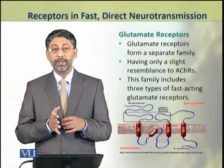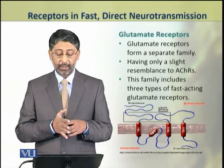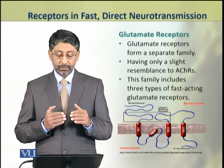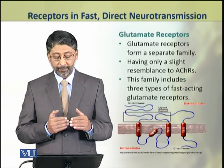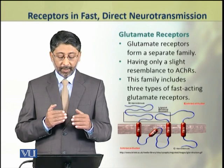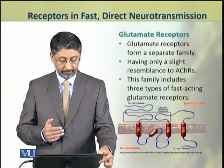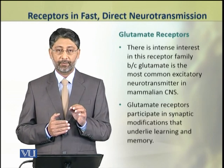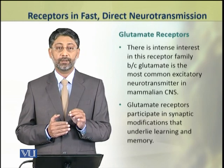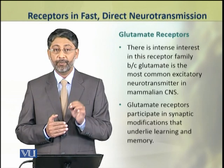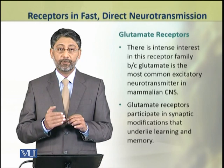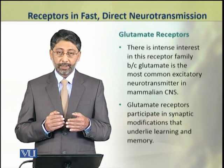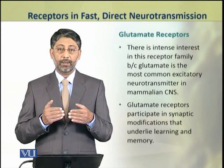In addition to ligand-gated ion channels, the other type of receptors are glutamate receptors. Glutamate receptors belong to a separate family and share very few similarities with acetylcholine receptors. The members of this family are called glutamate receptors. Scientists currently have an extremely high interest in glutamate receptors because glutamate is the major neurotransmitter produced by the cells of the brain involved in the very important functions of keeping memory and learning. Therefore, a great deal of further research on these neurotransmitters is currently ongoing.